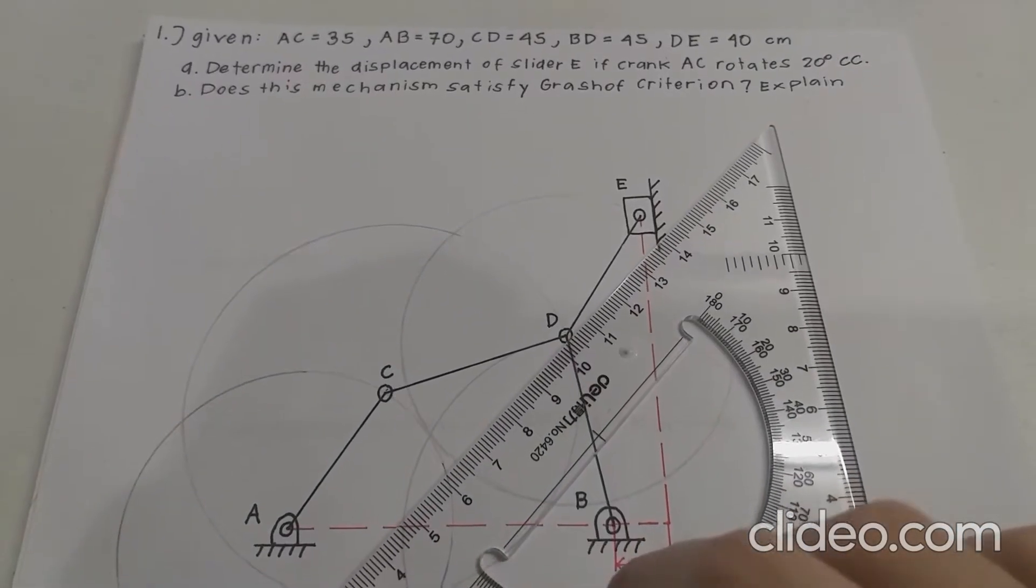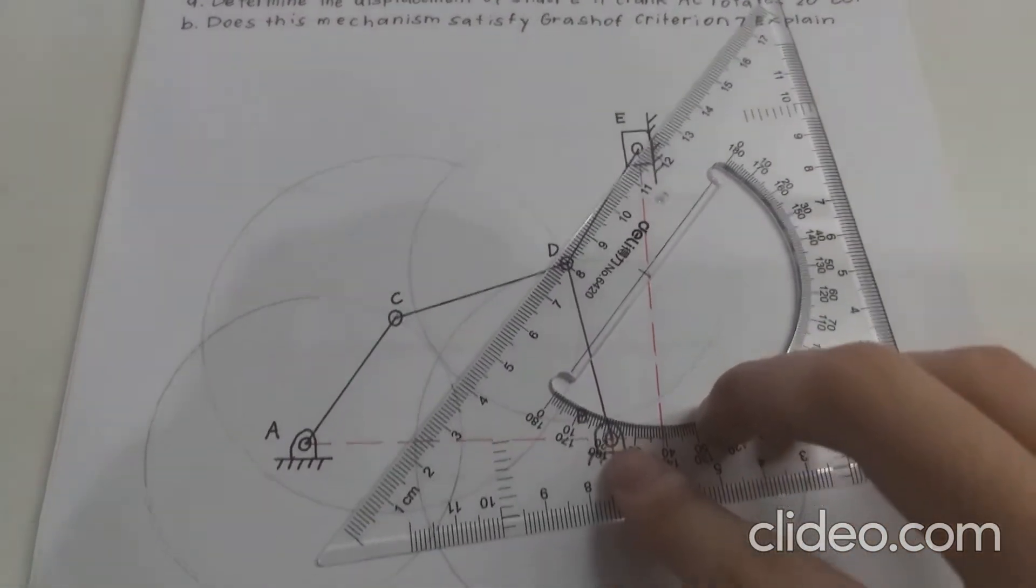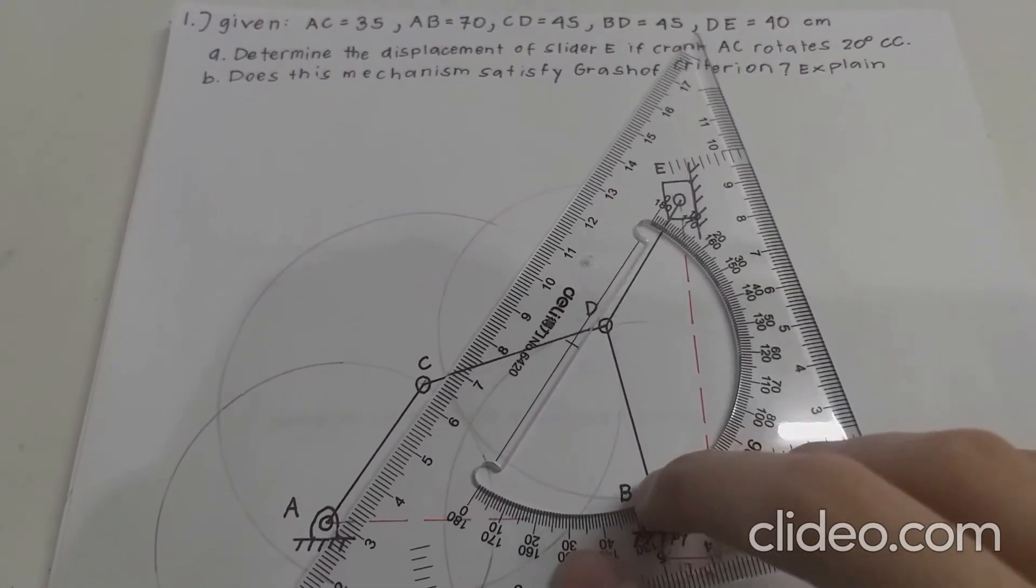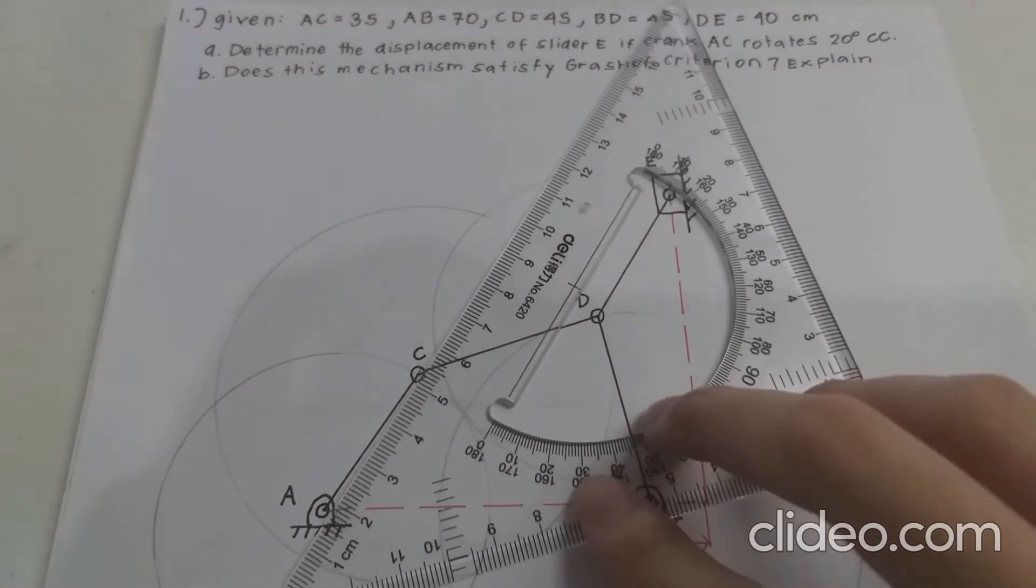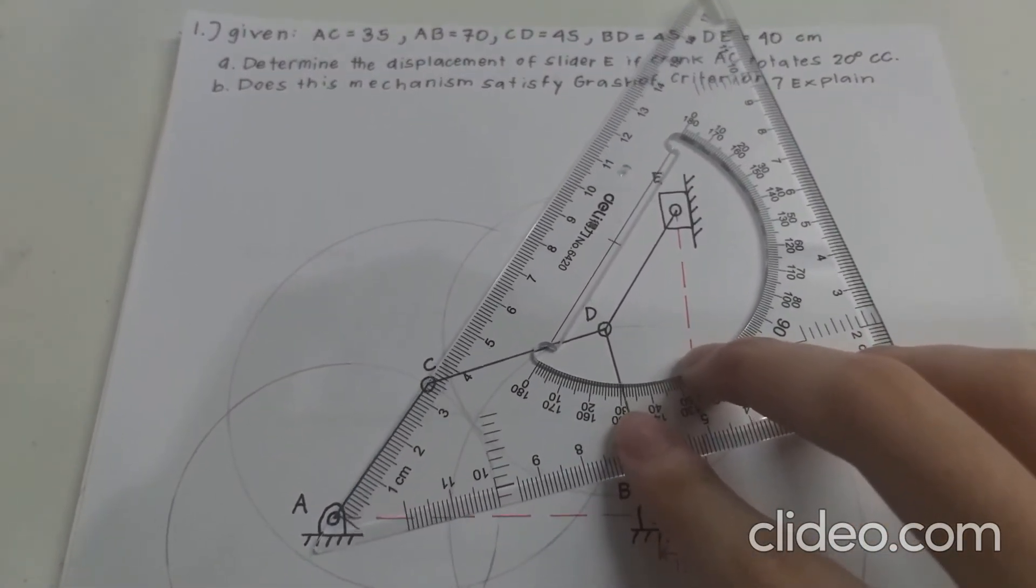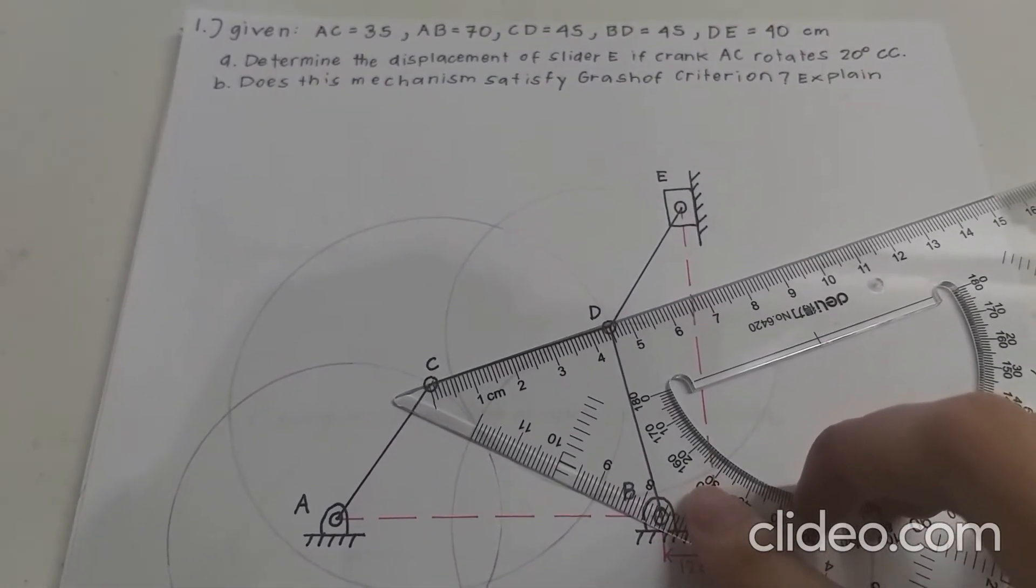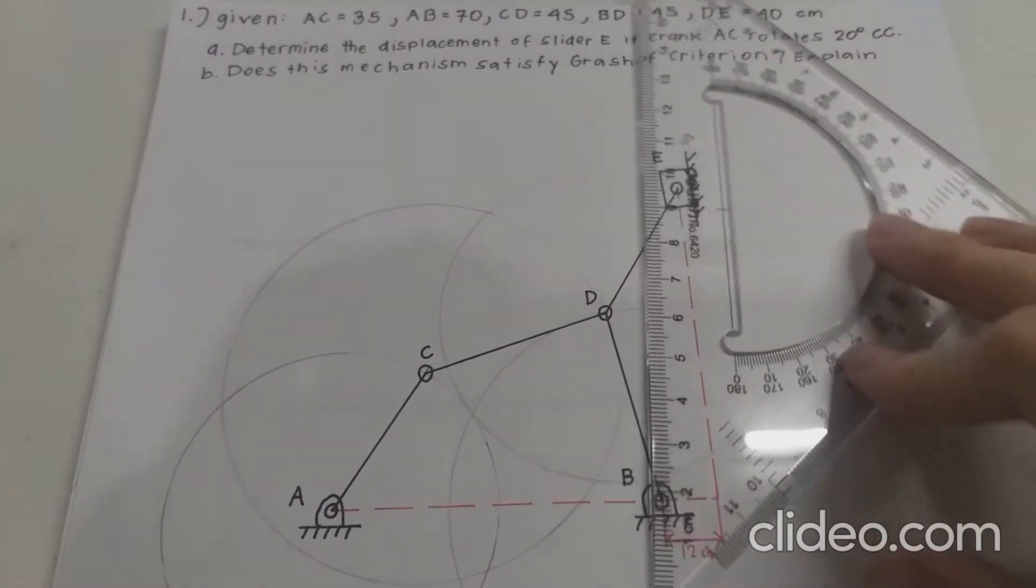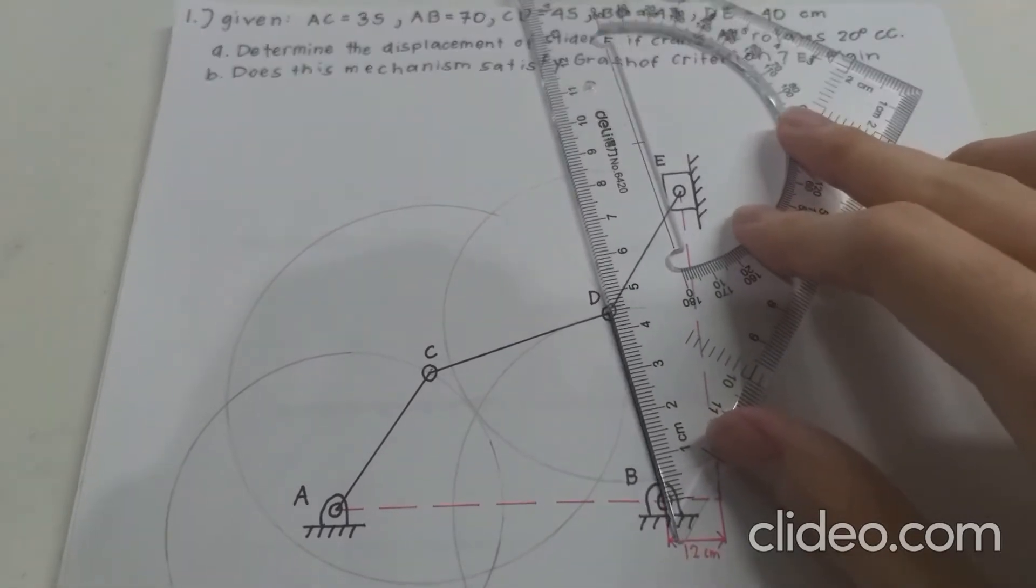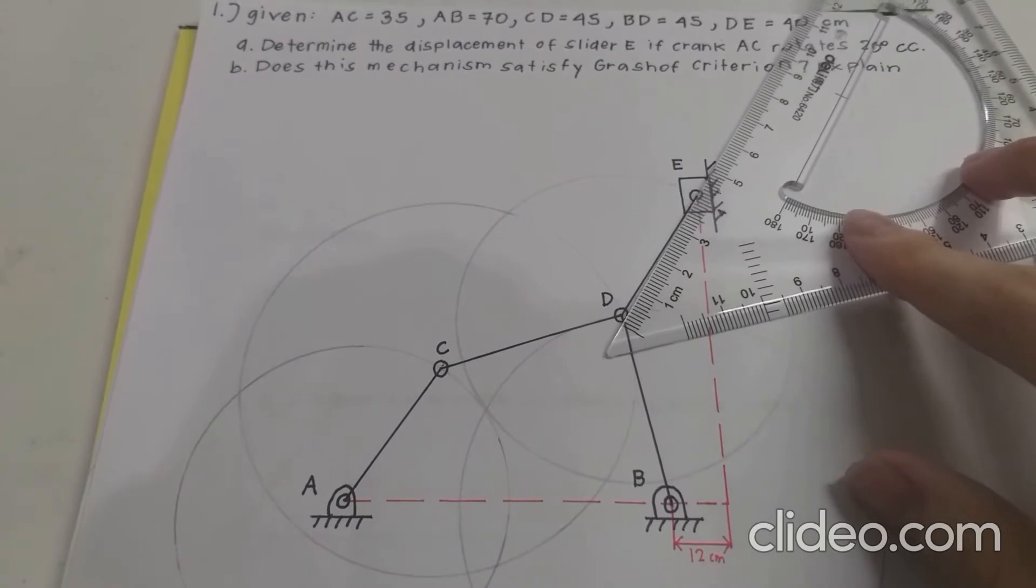For our first figure, this is what we're given. All the measurements will be in centimeters by the way and our ratio is 10 to 1 ratio. So from joint A to joint C, it measures 35 centimeters. And from C to D, it measures 45 centimeters. From D to B, it measures another 45 centimeters. And from D to E, it measures 40 centimeters.